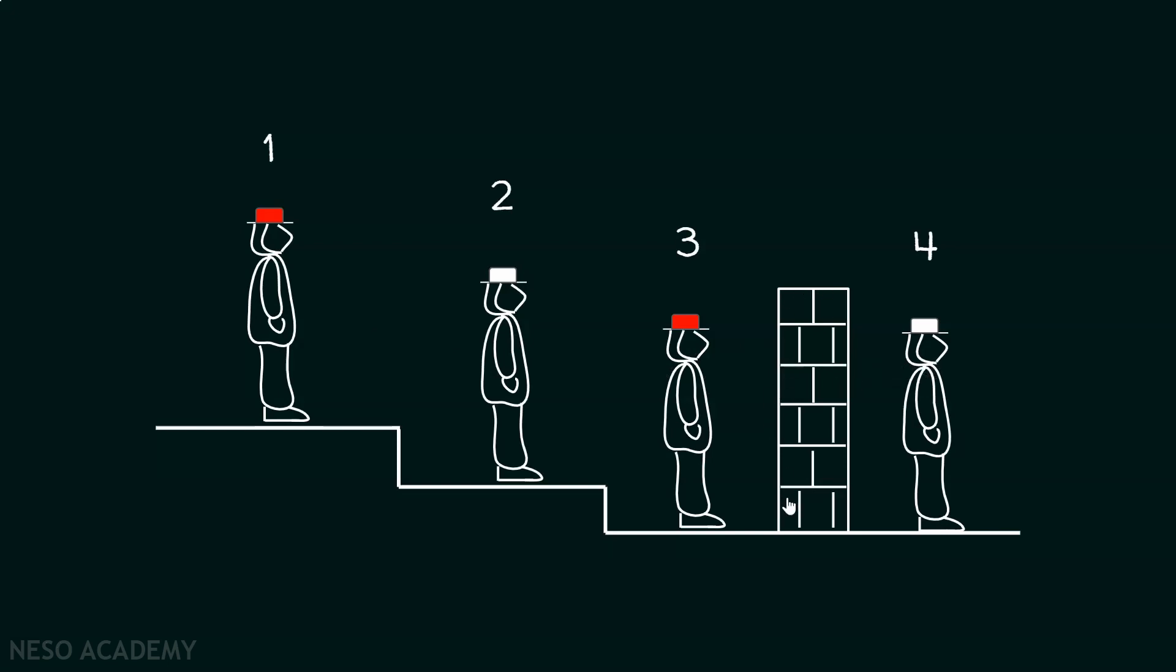This wall, as we can see, separates the fourth man from the other men. This man, man number one, can see man two and man three. Man two can see man three. But man three can see none of the others. And similarly, man four can see none of the others.